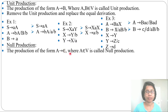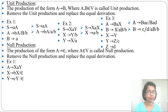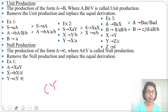Next: null production. A production of the form A derives epsilon, where A is a variable, is called a null production. We need to remove null productions and replace with equal derivations. Example: X derives epsilon, Y derives epsilon. Where 'cY' is given, substituting epsilon for Y gives simply 'c'. So just remove the epsilon and write 'c'.